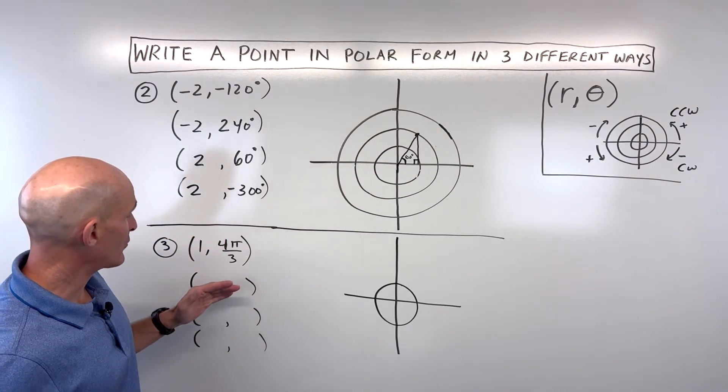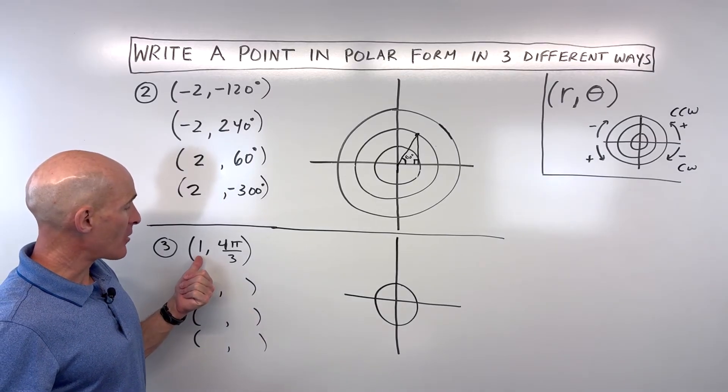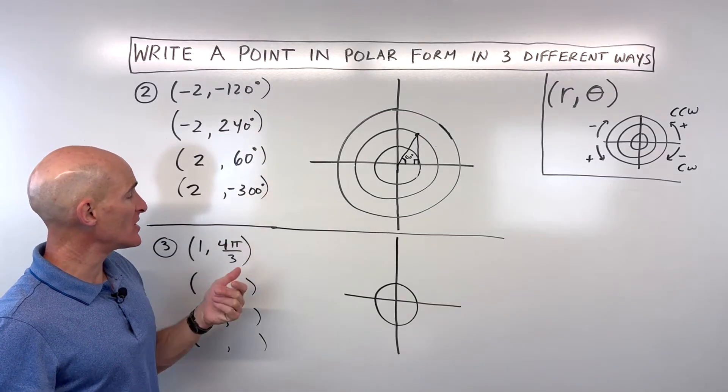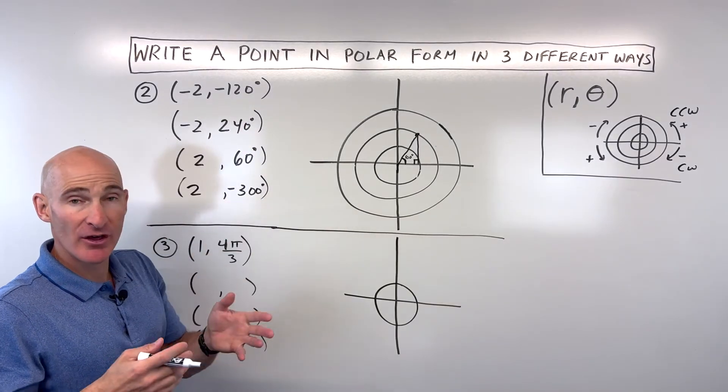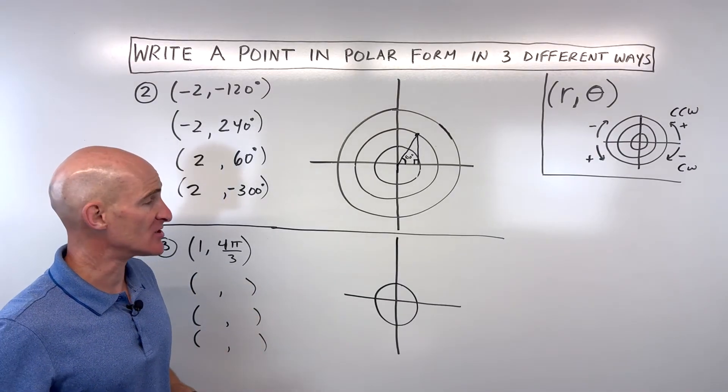Let's look at one last example, number three. See if you can do this one on your own. We've got 1 as our r value, and our angle is in radians, 4 pi over 3. Notice this one was in degrees. Usually if they give it to you in degrees, I'll give the other representations in degrees. If they give it to you in radians, I usually give the other representations in radians.